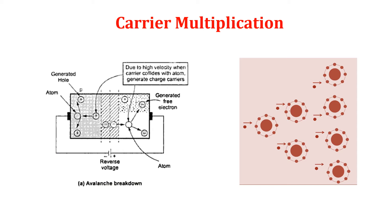The collision makes the electrons break the covalent bonds. These electrons are available as minority carriers and get accelerated due to the high reverse voltage. They again collide with other atoms to generate more minority carriers. This is called carrier multiplication. Finally, a large number of minority charge carriers move across the junction, breaking the p-n junction. These large numbers of minority carriers give rise to a very high reverse current.